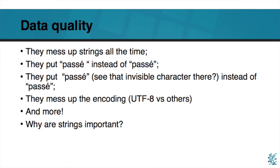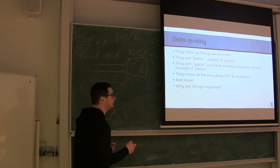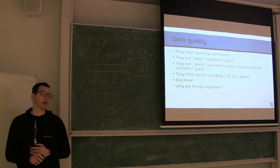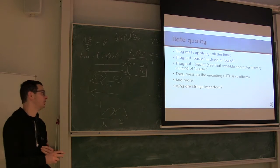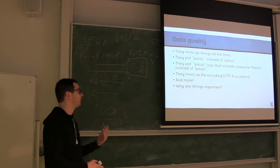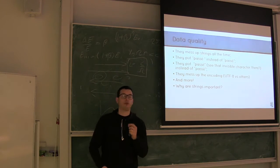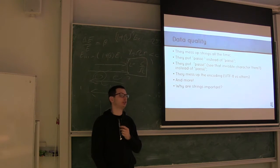Strings, they put passe and then a space instead of passe, without space. They put passe with an invisible character instead of passe without the invisible character. They put passe with an encoding and passe with another encoding. Why is this important, you may ask? It's important because we have a thing here in Europe, which they don't really have in the U.S., which is called privacy. And for privacy, we need to actually anonymize your data. And one of the things we use to anonymize the data is to take the hash of strings.